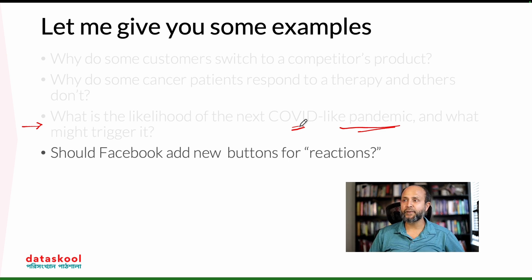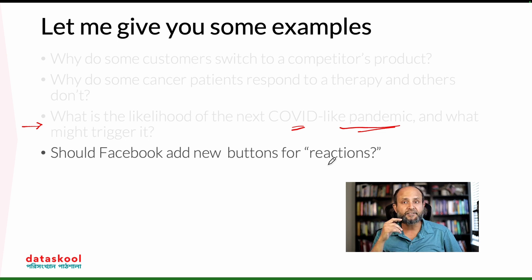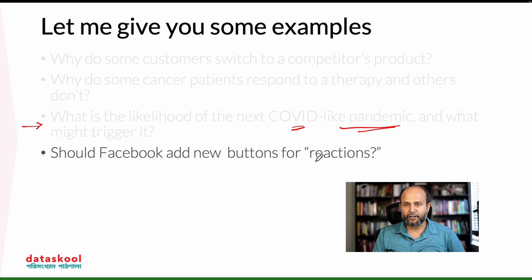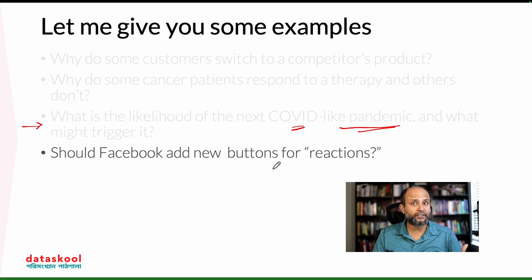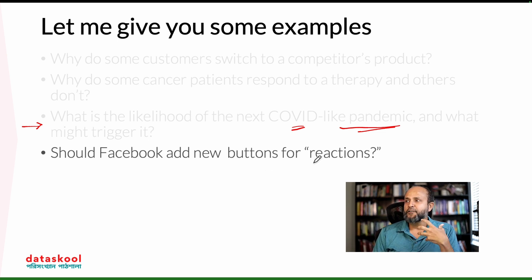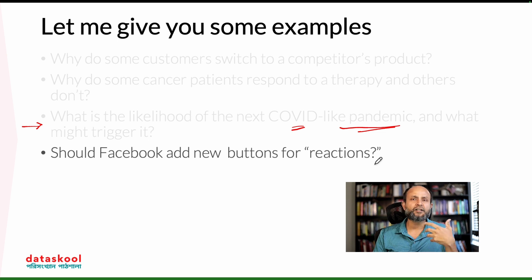Another question: should Facebook add new buttons for reactions? Think of it — as a business owner or product manager, the question comes: we already have several reactions, should we add some new Facebook reactions? Should we do it or not? That's the question. This kind of answering these kinds of questions is purely statistical, actually. They solve it using a statistical technique we call A/B testing, and that's one of the major components of it.